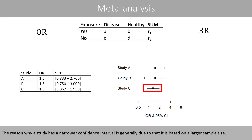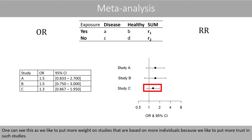The reason why a study has a narrower confidence interval is generally due to it being based on the largest sample size. One can see this as putting more weight on studies that are based on more individuals, because we like to put more trust in such studies.